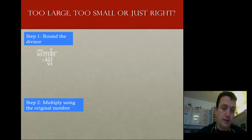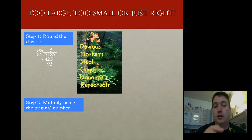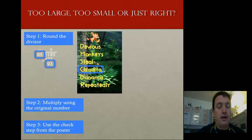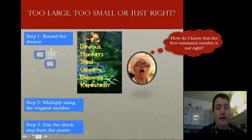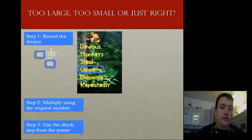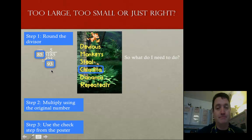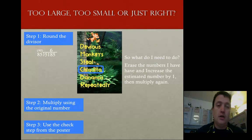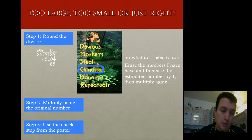I subtract and I get 93. Now I want to go back and use the division poster, specifically focusing on the check step. The check tells me I need to compare my divisor versus my remainder after subtracting. I notice immediately that my divisor is smaller than my remainder, which is wrong — it tells me I didn't take enough out. So I need to adjust by increasing my quotient digit by 1. I chose 5, but that wasn't enough, so that's going to be 6. Now I multiply 6 times my divisor, I get 510. Subtract, bring down the 5, I get 185, and now I'm done.